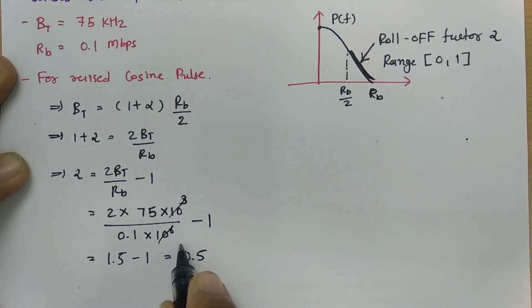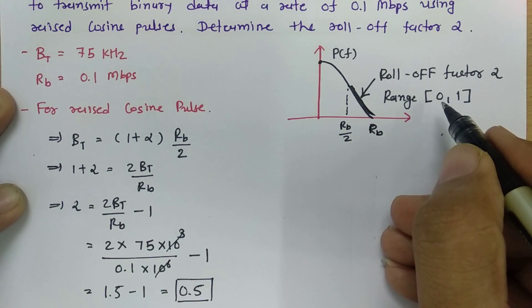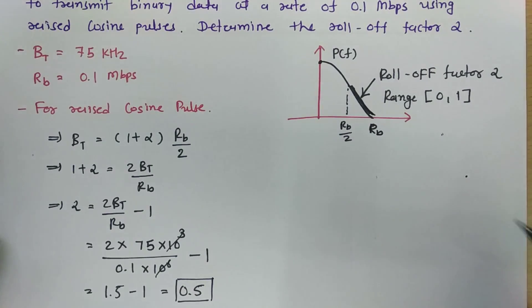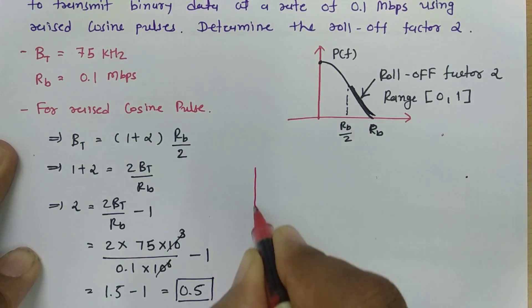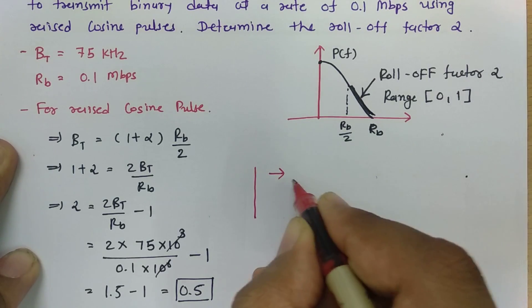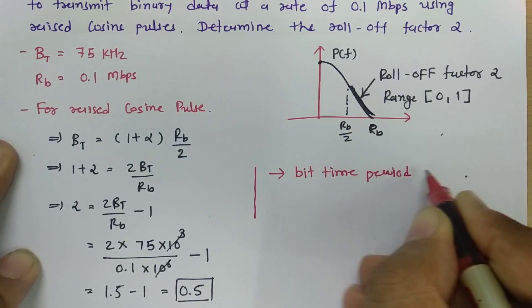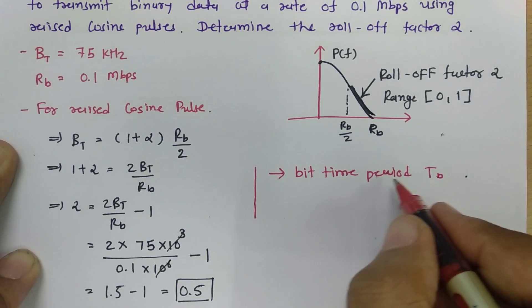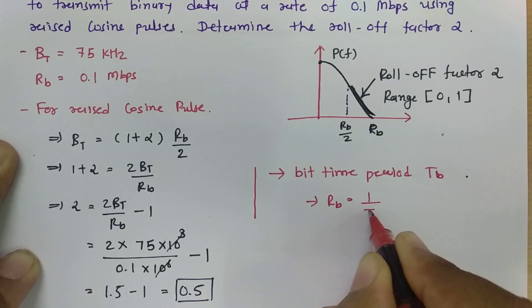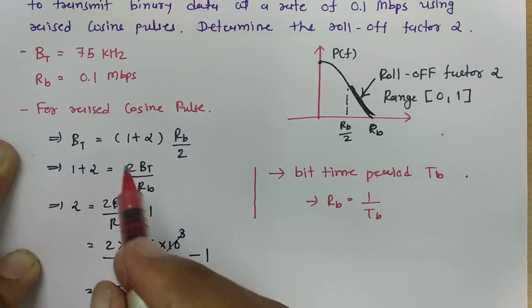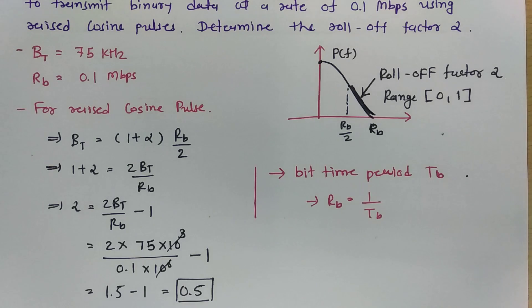So roll-off factor for this question is 0.5. Now see initially I have already told you its range is there between 0 to 1, so it is 0.5 here. Now you will be finding in some examples, sometimes in questions they don't give you data rate, but they may give you bit time period TB. So to calculate data rate RB we just need to take 1 divided by TB and then you will be having data rate. And that is what we can place in this formula that will solve this question. So this is how we can have a calculation of roll-off factor for pulse shaping.